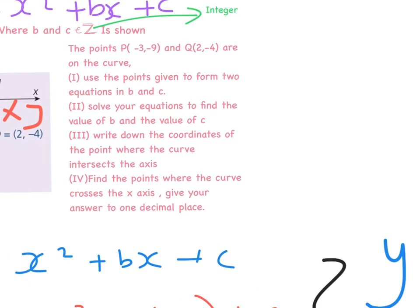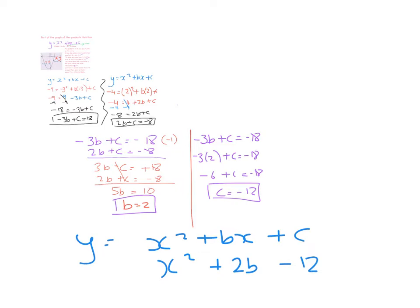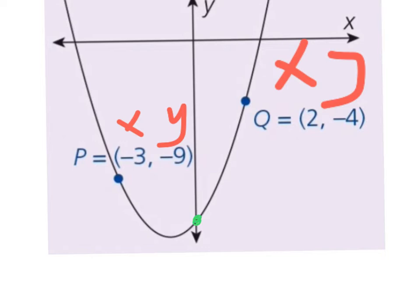Going back to the question: part one asked us to form two equations — done. Part two asked us to solve them — done, giving b equals 2 and c equals minus 12. Part three asks for the coordinates where the curve cuts the y-axis. The curve is x squared plus bx plus c, which is now x squared plus 2x minus 12. The constant at the end always gives the y-intercept, so the answer is the point (0, -12) — along as far as 0, down as far as minus 12.